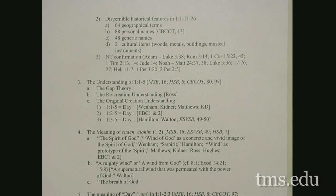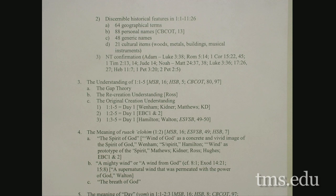You've got 88 personal names, 48 generic names, different kinds of metals. It literally says what metals were found in the garden — gold, bdellium, onyx stone. These are real things. There are 21 cultural items: wood, metals more broadly, buildings, musical instruments. You're listening to this on the plains of Moab and as Israelites you're saying, 'These are individuals, and these are things, and these are places that we are aware of. What do you mean, symbolism?'